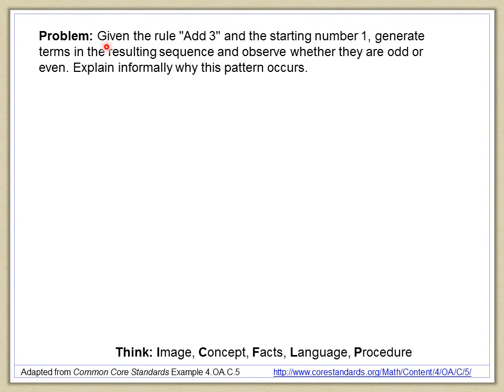We'll begin this thread by looking at the actual example that's given in the standard, or something very close to it. Given the rule add three and the starting number one, generate terms in the resulting sequence and observe whether they are odd or even, and then explain informally why this pattern occurs.